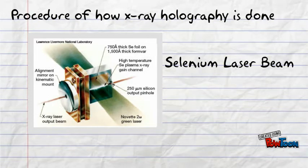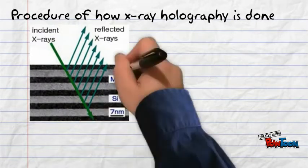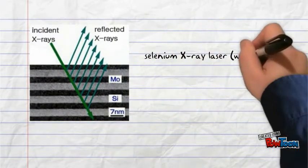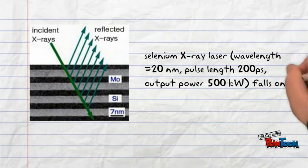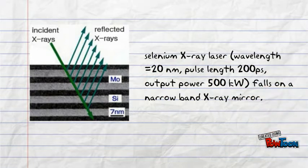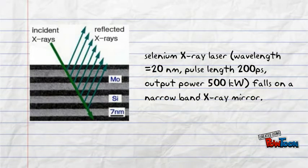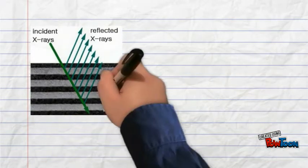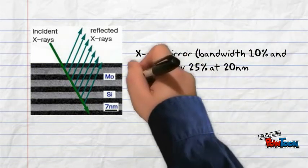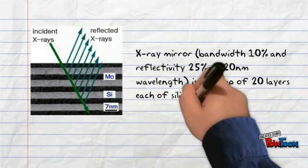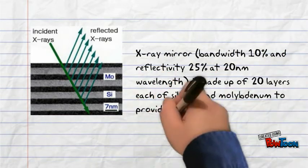The X-ray beam from a selenium X-ray laser falls on a narrow band X-ray mirror, which reduces the broad band X-ray background produced by the selenium laser. The mirror is a substrate with the flatness and roughness of more than 2nm to preserve the coherence of the X-ray laser beam and is coated with alternate 20 layers each of silicon and molybdenum to provide high X-ray reflectivity.